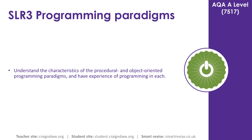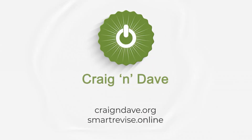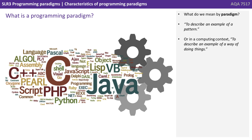In this video we look at the characteristics of different programming paradigms. So what do we mean by paradigm? To describe an example of a pattern, or in a computing context, to describe an example of a way of doing things.